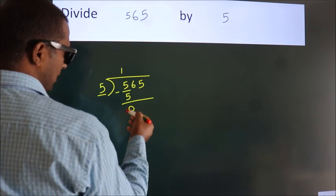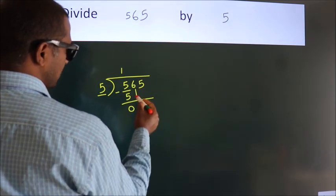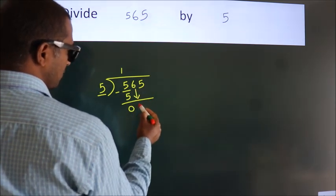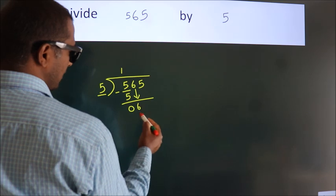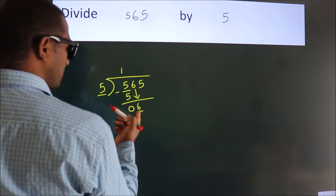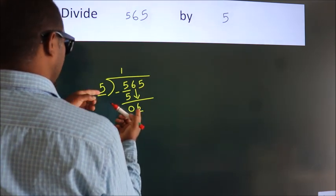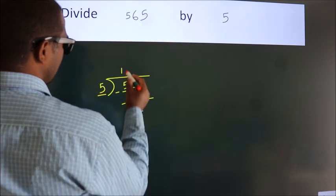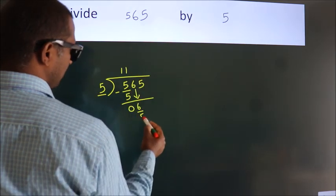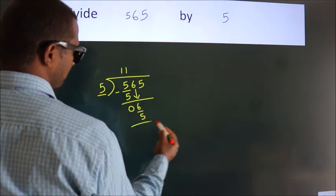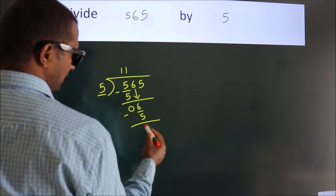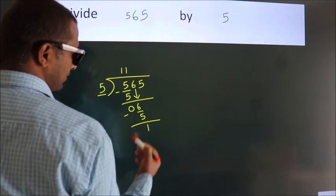After this, bring down the beside number. So 6 comes down, giving us 6. A number close to 6 in the 5 table is 5 once, which is 5. Now we subtract. We get 1.